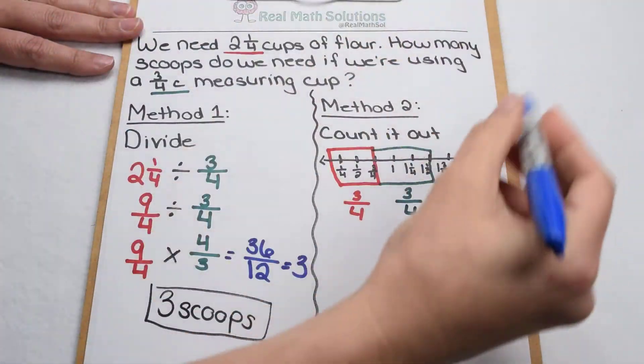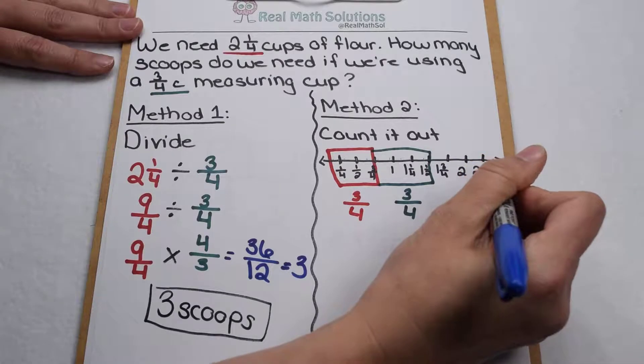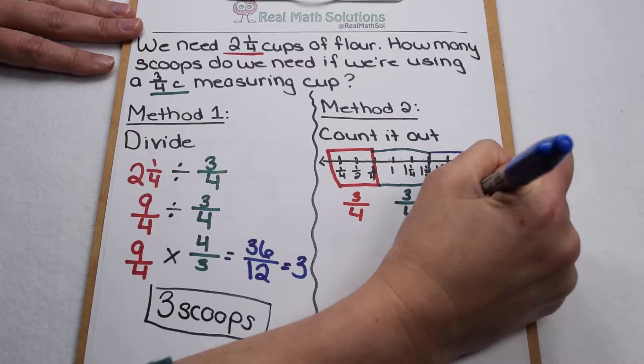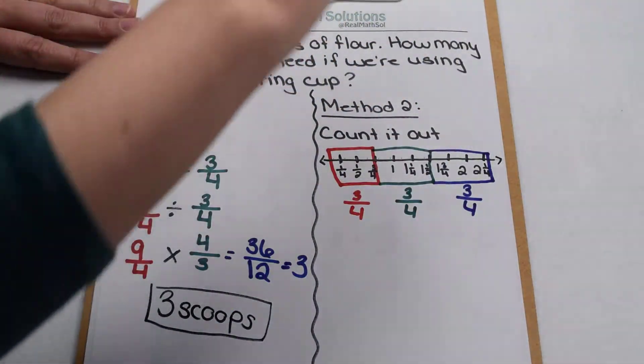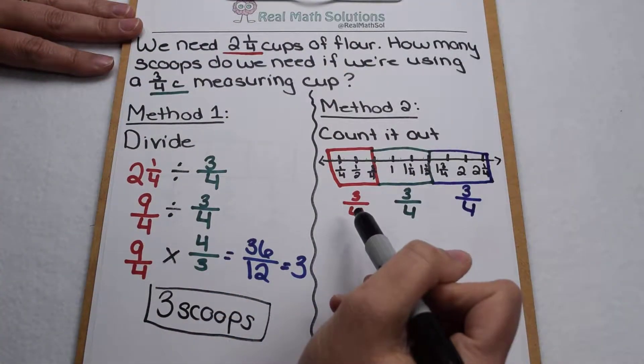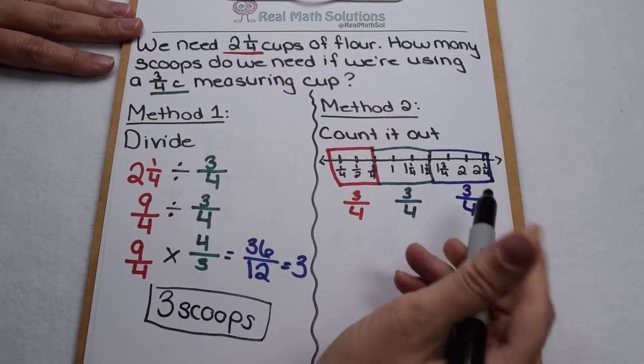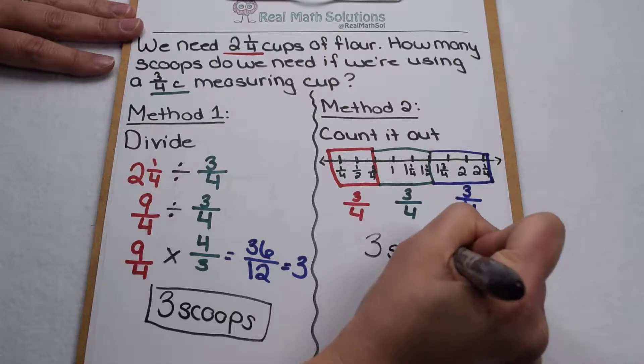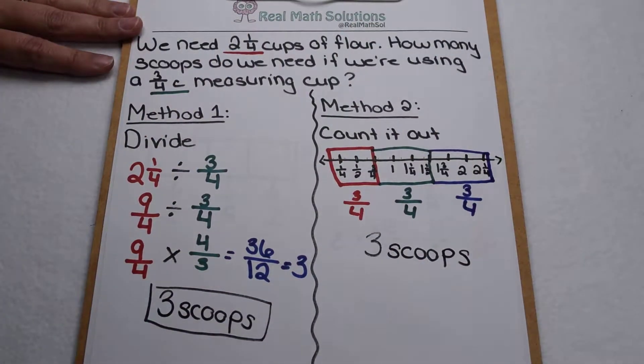And then for my last scoop, one fourth, two fourths, three fourths would take me all the way up to my two and a quarter cups. So if I drew it out on a number line I can see that I'm still going to need one, two, three scoops in order to get exactly two and a quarter cups.